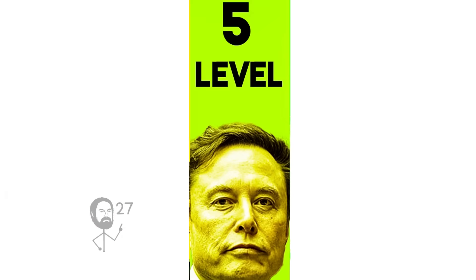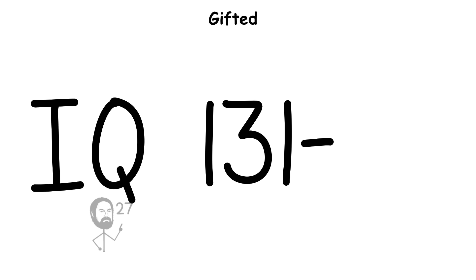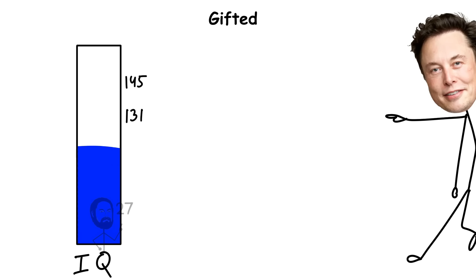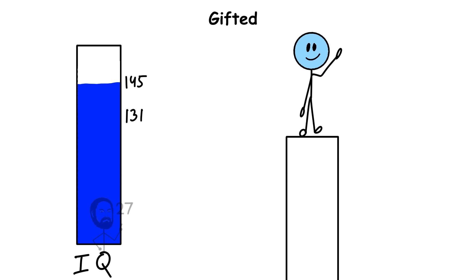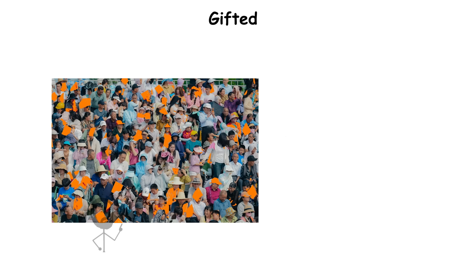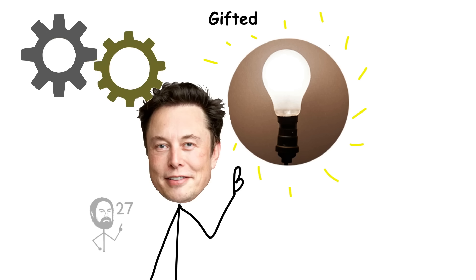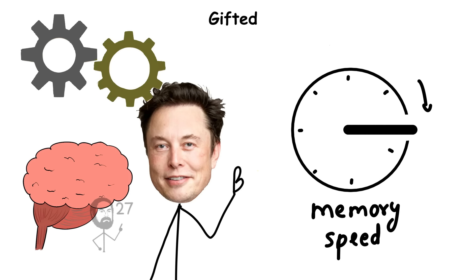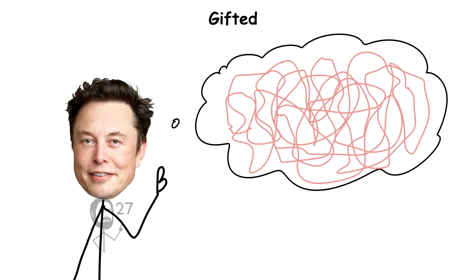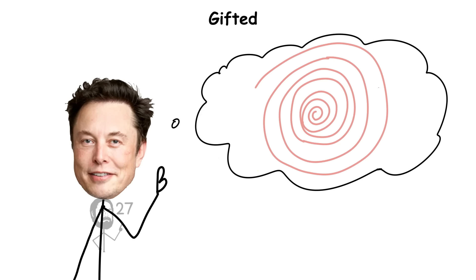Level 5. Gifted. IQ 131-145. An IQ within the range of 131-145 places an individual in roughly the top 2% of the population. People at this level often exhibit exceptional reasoning, memory, and learning speed, along with an ability to integrate complex ideas into coherent systems of thought.